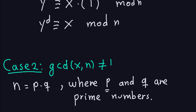Let's remember what n was. For the RSA, the n, which is the modulus, is always a product of two primes, p and q, where p and q are different primes. So p and q are prime numbers and they are different from each other — p is not equal to q.